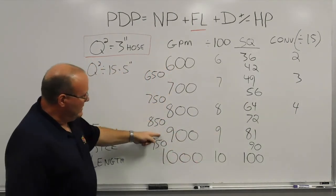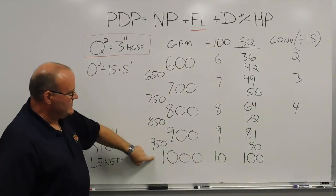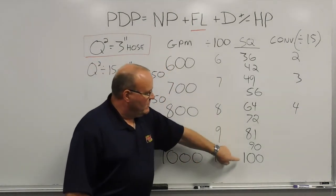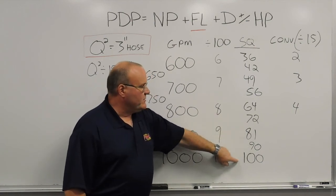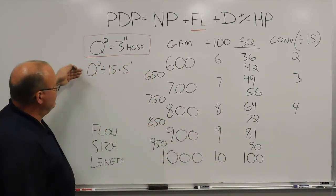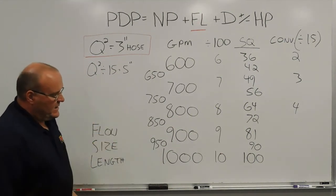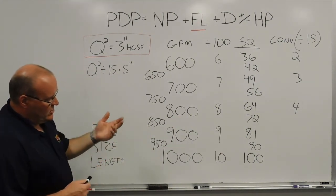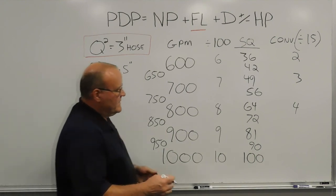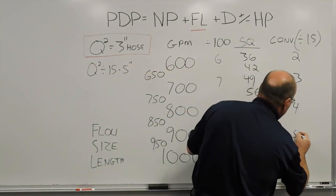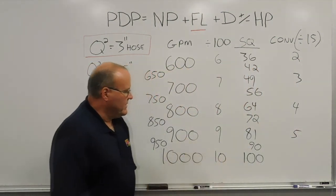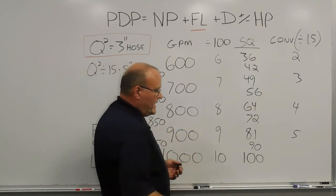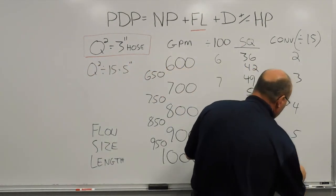And then working right on down the line, 900 and 1,000 gallons a minute, 81 and 100 respectively are your 3 inch hose friction loss numbers. So 81 divided by 15, you're going to end up with just over 5. And then for 100, you're going to end up with almost 7. So 6 and change. We'll just call it 7.